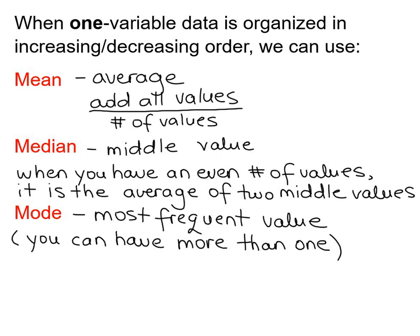When you have an even number of values, it is the average of two middle values. And the mode, which is the most frequent value that you have in your data set. Now, this only works for one variable data. It does not work for two variable data.